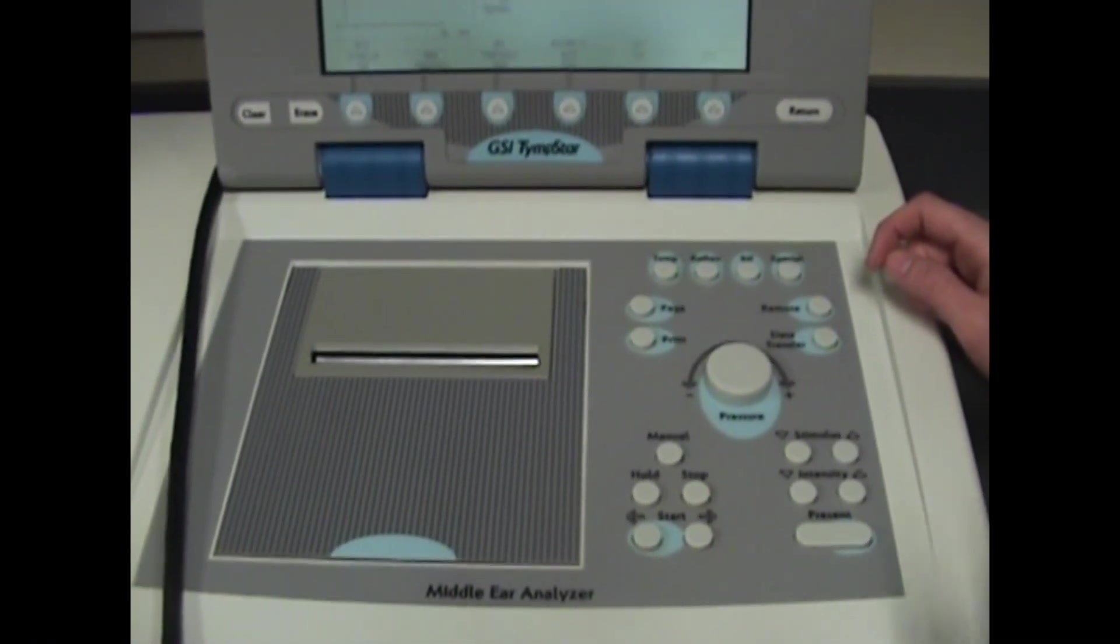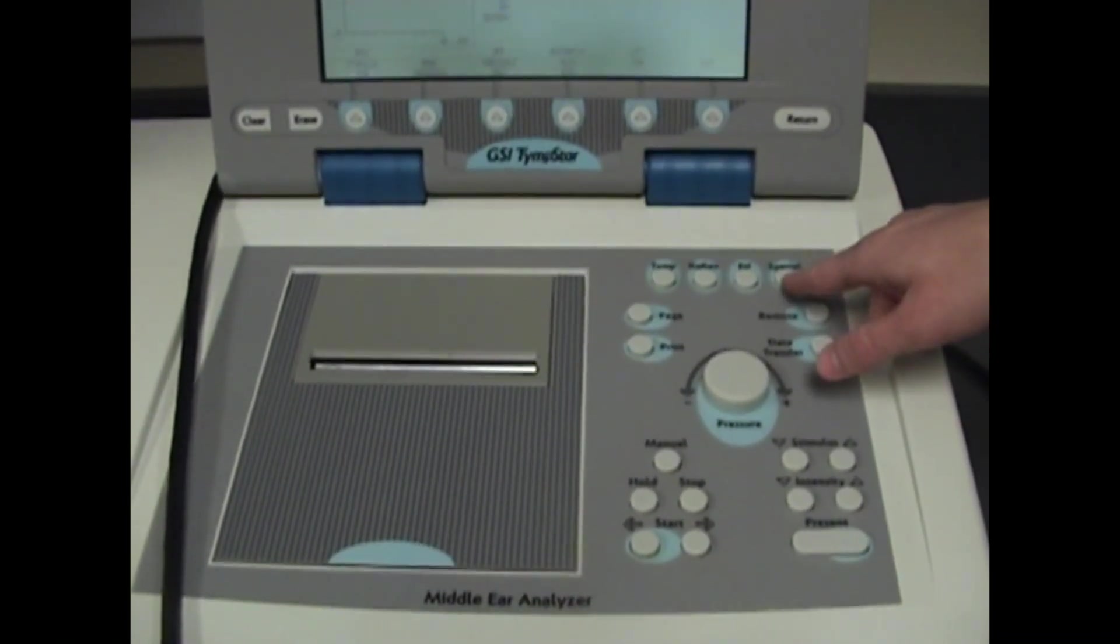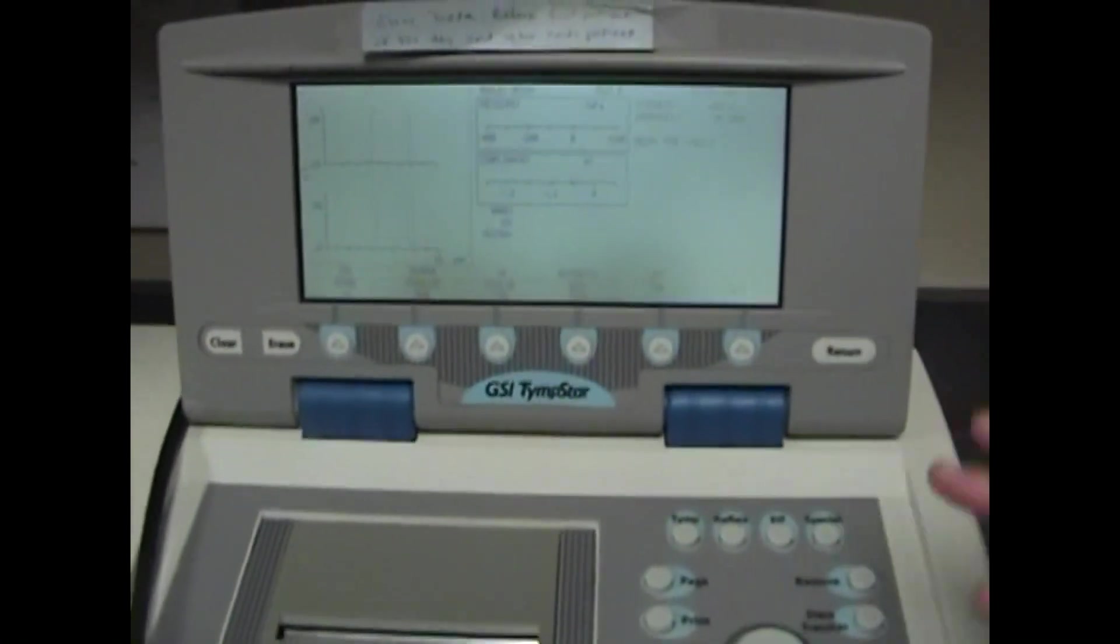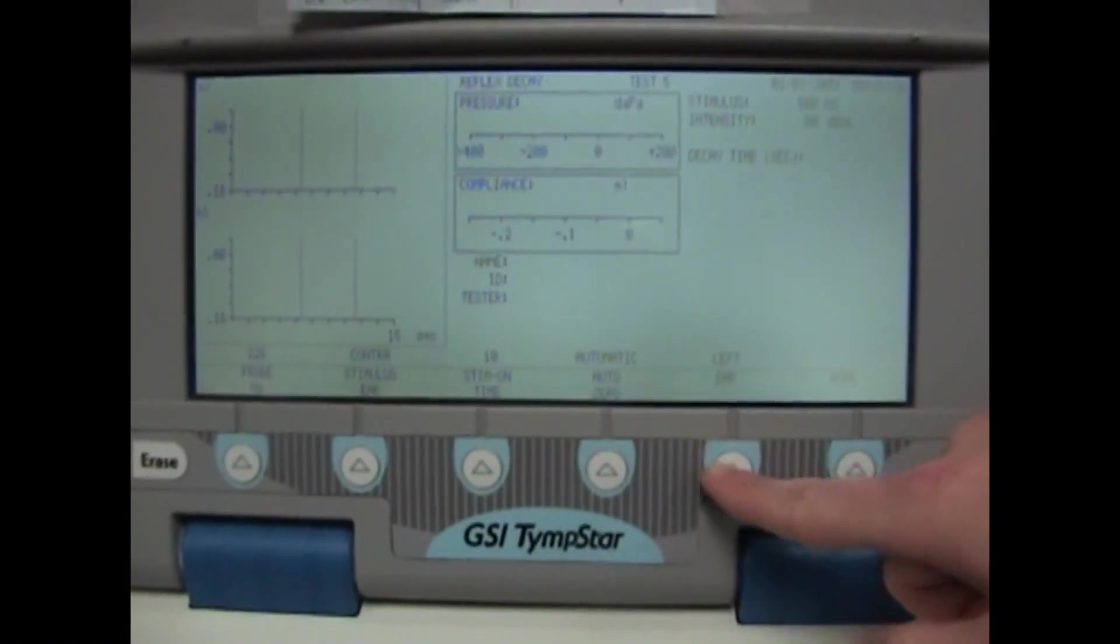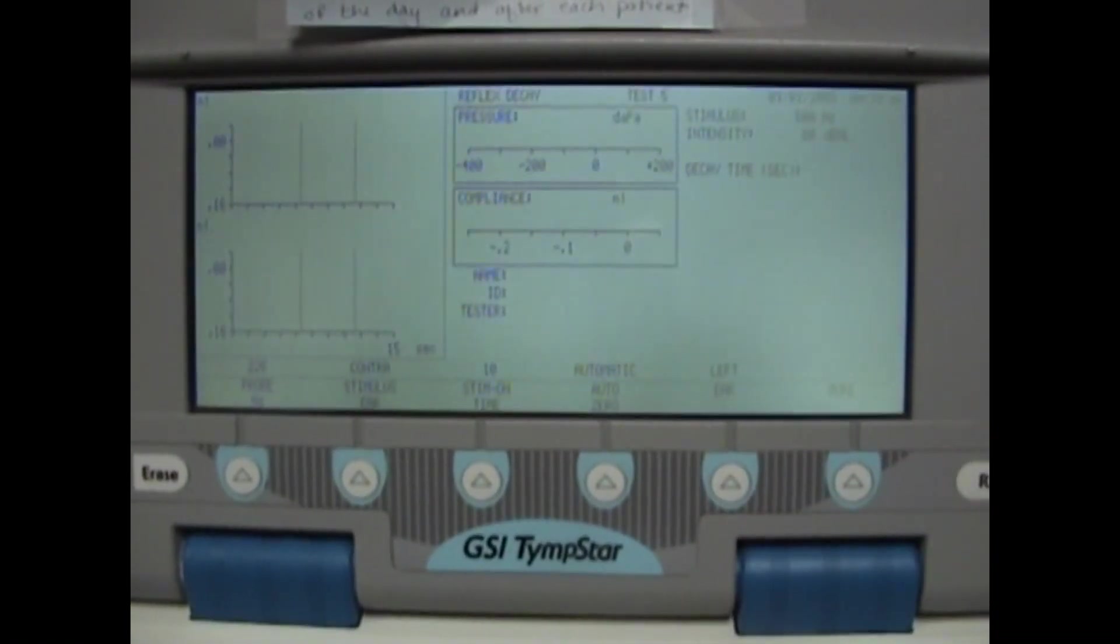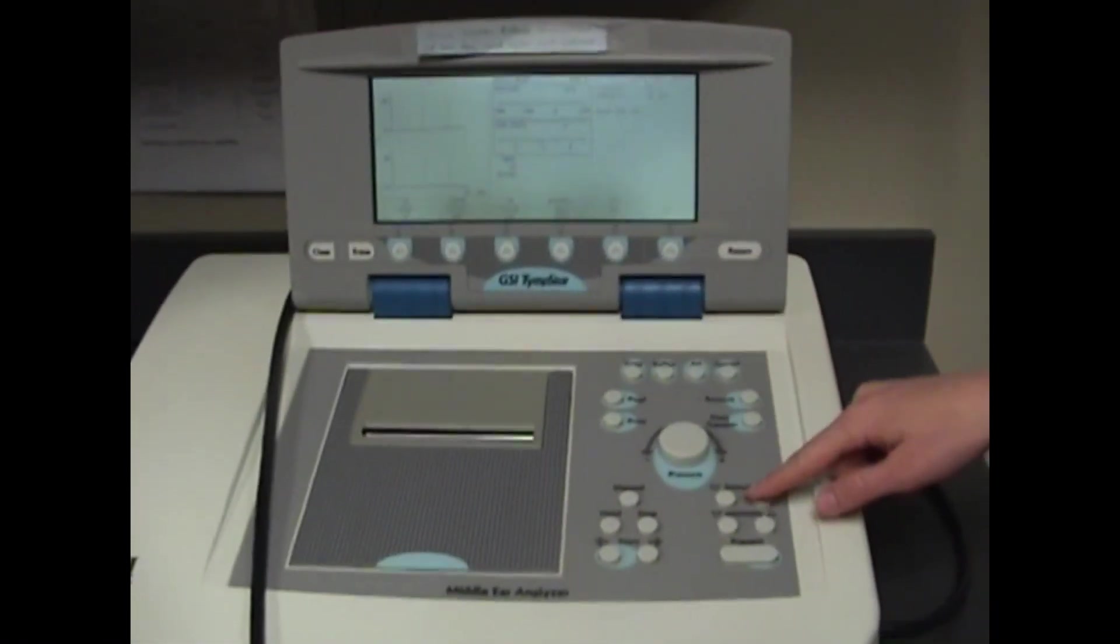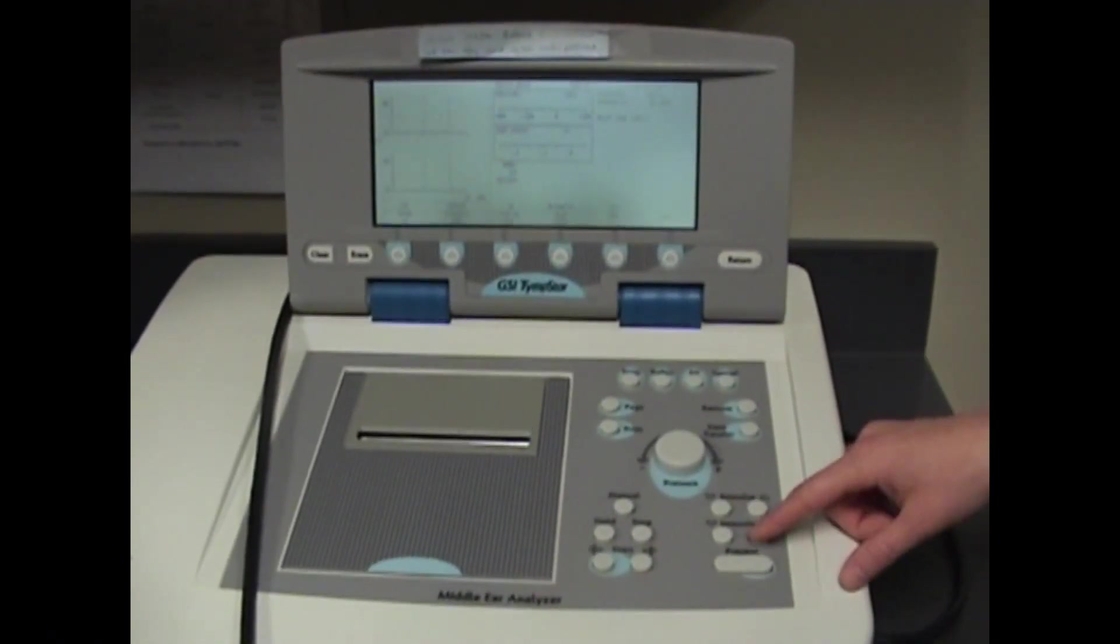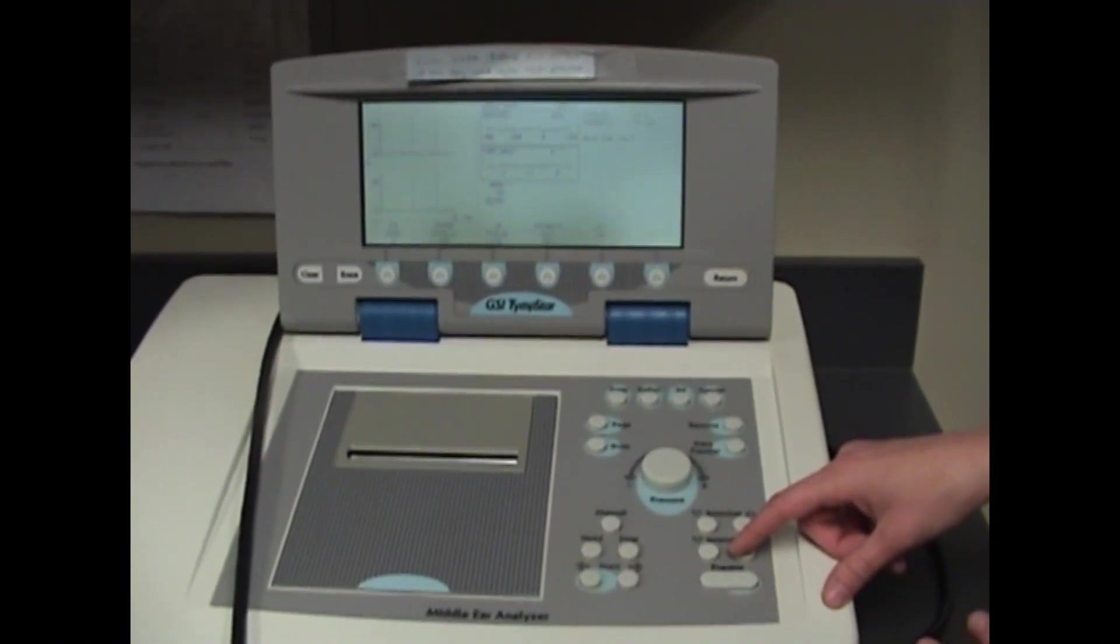After going through that, you'll take a closer look at 500 Hertz and 1000 Hertz to see if you can do reflex decay testing. To get to that menu, press special and you'll get to your reflex decay screen. Everything should be set up from contra before—you should have contra, left ear as your stimulus ear, and then select the appropriate stimulus, either 500 Hertz or 1000 Hertz.